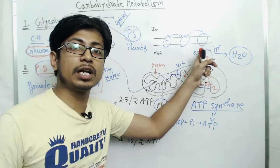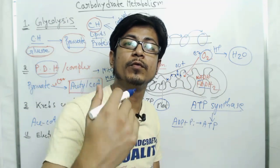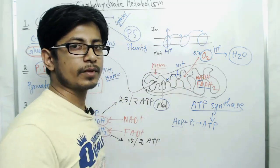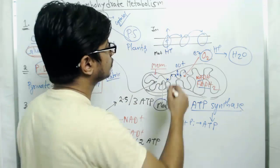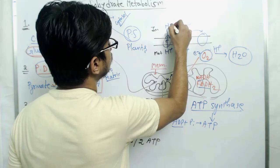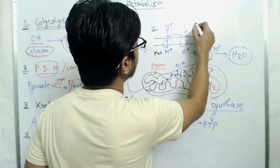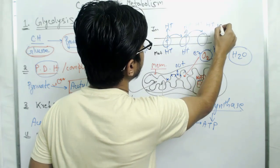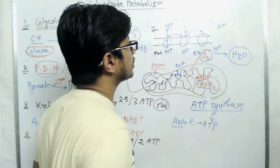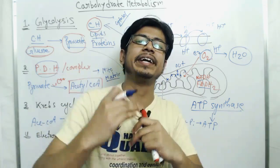The electron transport is coupled with proton movement — movement of hydrogen ions across this membrane. Protons are pumped out from the matrix, so in the intermembrane space the proton concentration becomes very high, creating a proton gradient across the mitochondrial inner membrane.